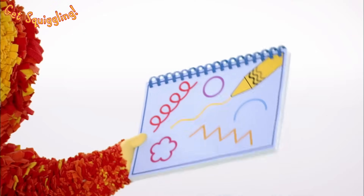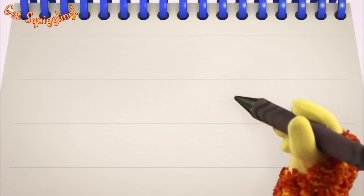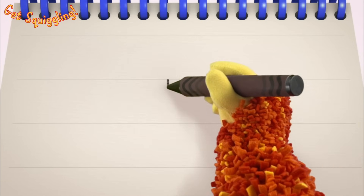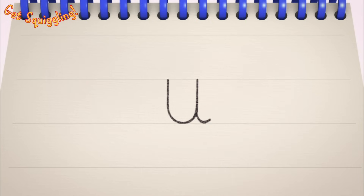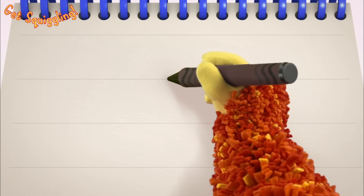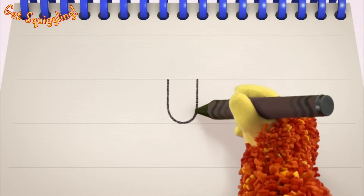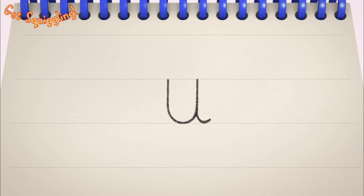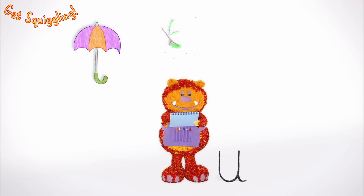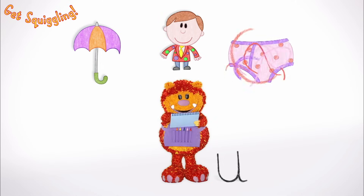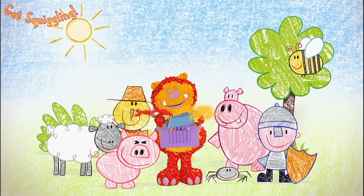Have you got your squiggle pads and squiggle sticks ready? Let's get squiggling! Holding your squiggle stick like this, move it down, round, up, down and flick — the letter U! Let's squiggle it again: go down, round, up, down and flick — the letter U! Shall we squiggle some things that start with the letter U? An umbrella, an uncle and underpants — they all begin with the letter U!